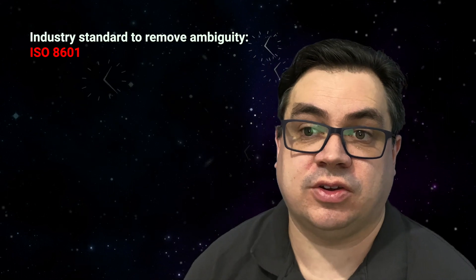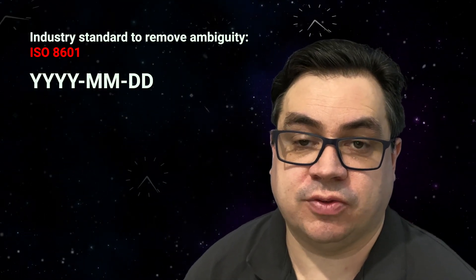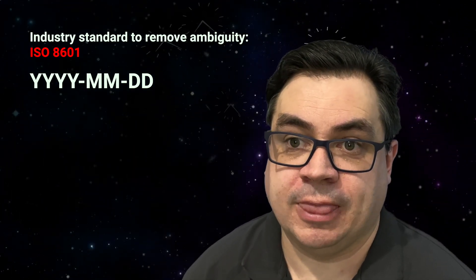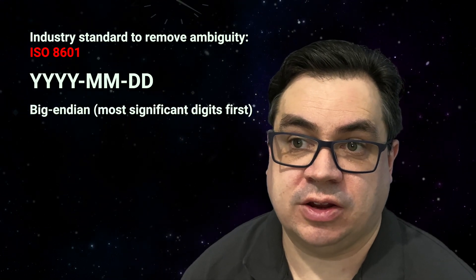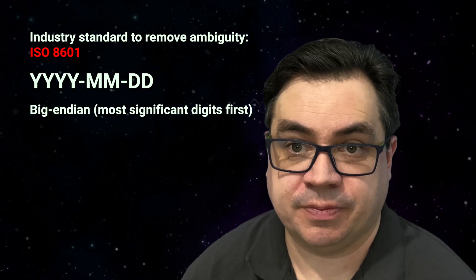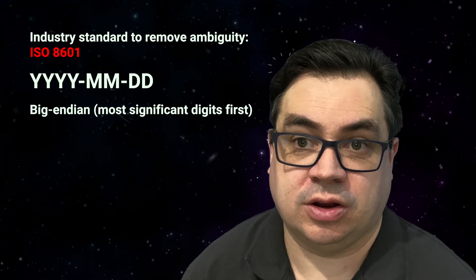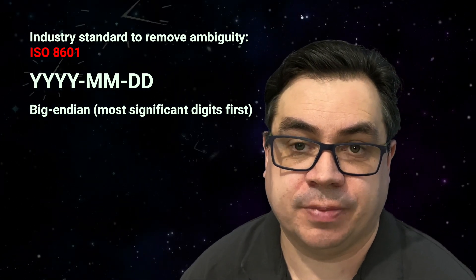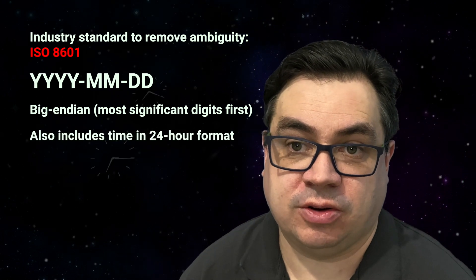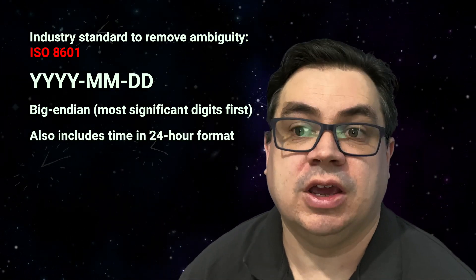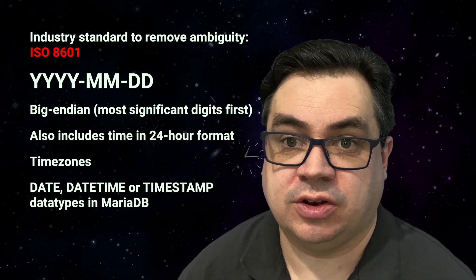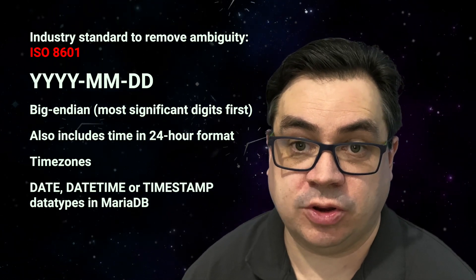There's an industry standard to remove the ambiguity in time and date representations called ISO 8601. The date format for this is a four-digit year, a dash, a two-digit month, a dash, and a two-digit day. This is a big-endian way of representing the date, which means the most significant digits come first. Even if you've never seen it before, it's relatively simple to figure out no matter where in the world you're from. The standard also includes representation of time in 24-hour format and even has representation of time zones. If you've done any work using date, datetime, or timestamp data types in MariaDB, you'll be used to this format.